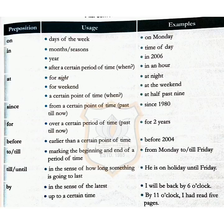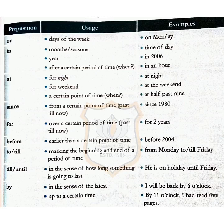Usage of preposition. The following table contains rules of some of the most frequently used prepositions in English. Preposition 'on' is used for days of the week, for example: on Monday, on Tuesday. 'In' is used for a given time of day, like in 2006, in an hour. 'At' is used for a certain point of time, like at night, at weekend, or at half past nine.